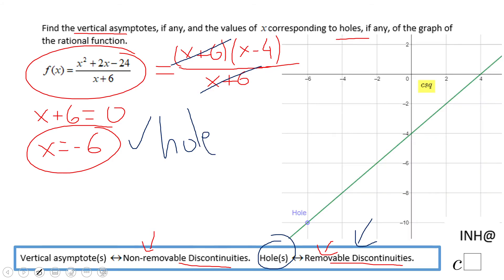If you use the graphing calculator and zoom in, you will notice that you're going to have a hole here at negative six. Other than that, the graph looks like x minus four, like a line.